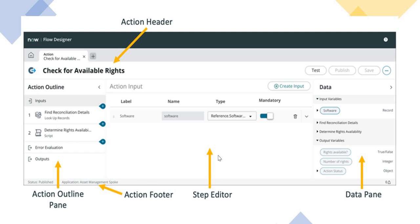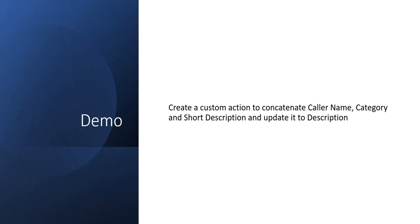In this demo we will create a custom action to concatenate the caller name, category, and short description from an incident, and update that concatenated string to the description field of the incident. We will require three inputs — caller name, category, and short description — and the output will be the concatenated string.